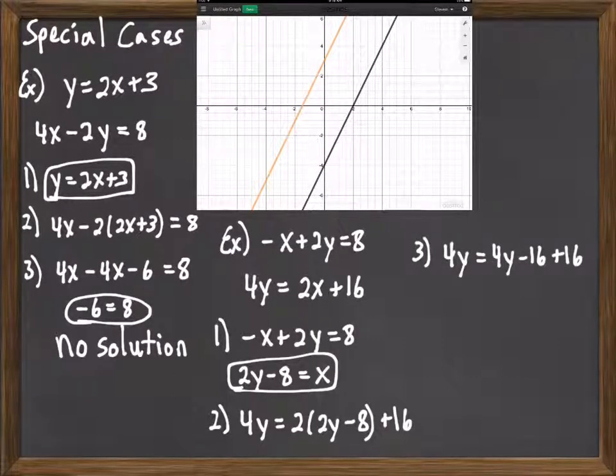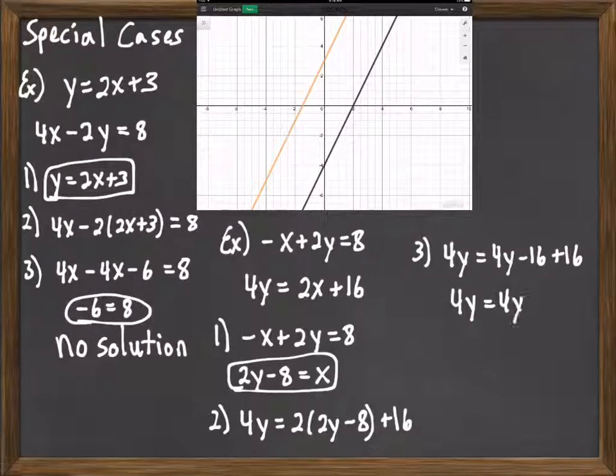So I can distribute the 2 through, get 2 times 2y would be 4y. 2 times 8 would be minus 16. Combine like terms, the 16's cancel out. I have 4y equals 4y.